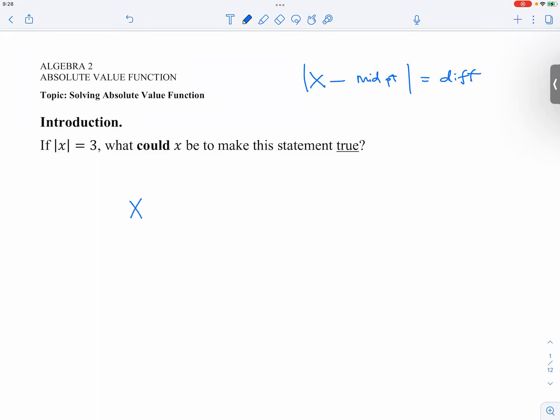x could be negative 3, because absolute value of negative 3 would give you 3 and 3 is equal to 3, that would be a true statement. Do we have another one?